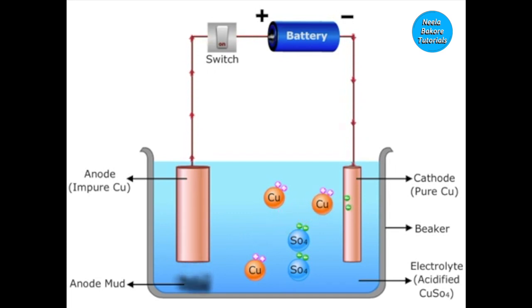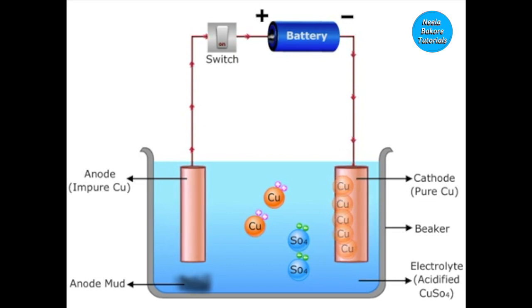They gain two electrons from the cathode and in turn change into copper atoms. As more and more copper atoms get deposited on the cathode, the cathode goes on becoming thicker.